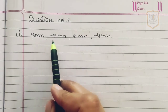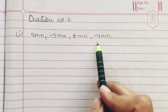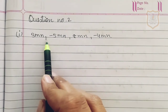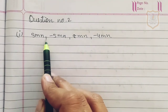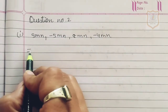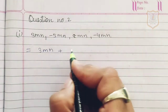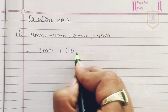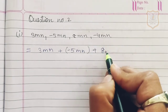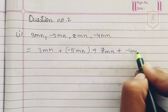The first part of question number 2 has the terms: 3mn, minus 5mn, 8mn, minus 4mn. We have to add these terms. In place of the comma we will put a plus sign, so we write: 3mn plus (minus 5mn) plus 8mn plus (minus 4mn).